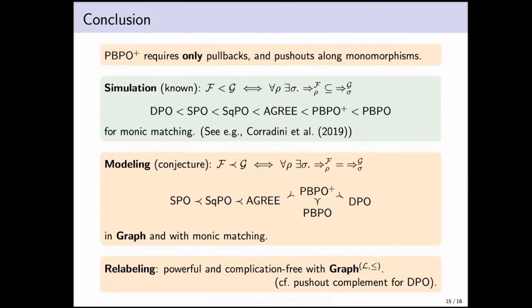To conclude, PBPO+ requires really only pullbacks and pushouts along monomorphisms. So it's weaker than adhesivity, and I saw some earlier talks, for instance by Nicolas, where he also had some examples of where adhesivity was too strong. I hope that Graph(≤,⊔) is one other category that can be considered interesting to be used for rewriting. And what we personally also like, already about PBPO as it was introduced by Corradini and colleagues, is that it really requires only an understanding of pullbacks and pushouts, no more complex notions.